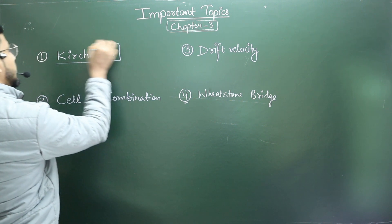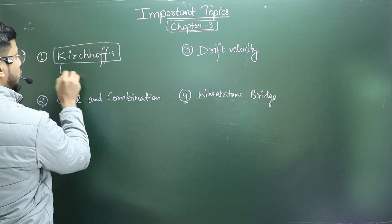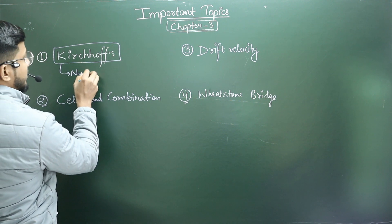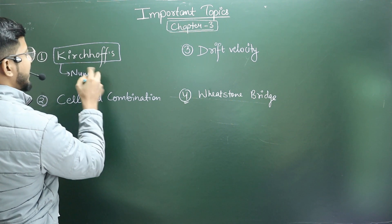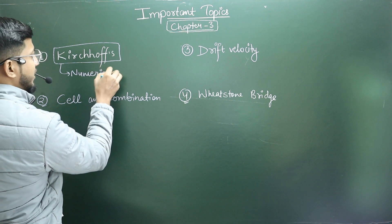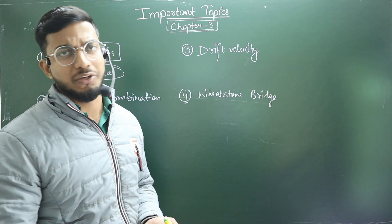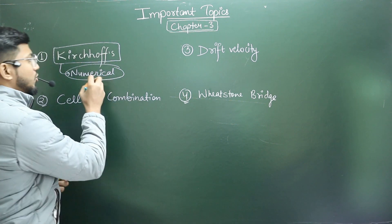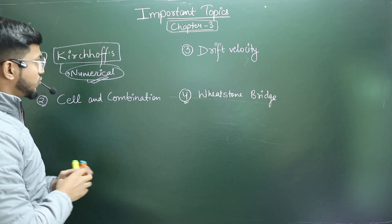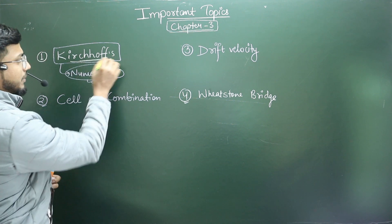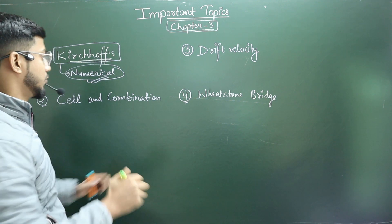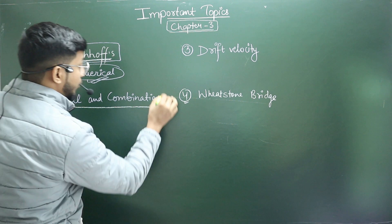The first topic which I have is Kirchhoff. Kirchhoff doesn't mean to be numerical, I am saying numerical and that is one type of numerical. You will do 4-5 numericals because you will easily understand which you have to give a circuit and the current I1, I2 or I3, so you need to solve this type of numerical. Kirchhoff is only numerical, I am repeating to you, Kirchhoff is only numerical.